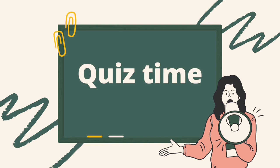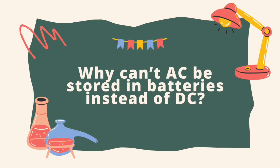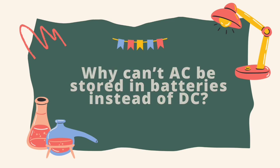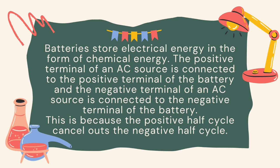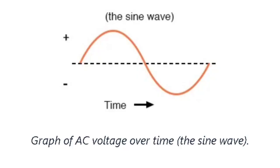Now it's time for a recap and quiz. The first question: why can't AC be stored in batteries instead of DC? Batteries do not store energy directly; they store electrical energy in the form of chemical energy. When the positive terminal of an AC source is connected to the positive terminal of a battery and the negative to the negative, current starts to flow. But since it is alternating current, it changes its polarity and there is no actual supply of energy, because the positive half cycle cancels out the negative half cycle. This can damage the battery, which is why AC is not stored in batteries.